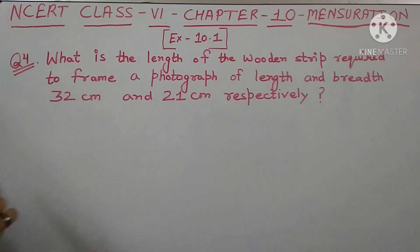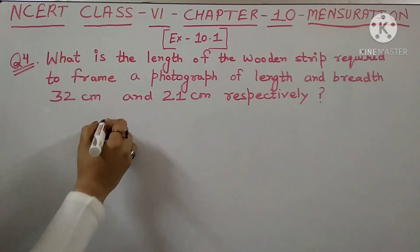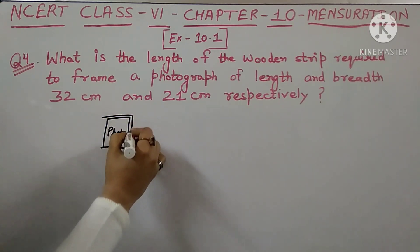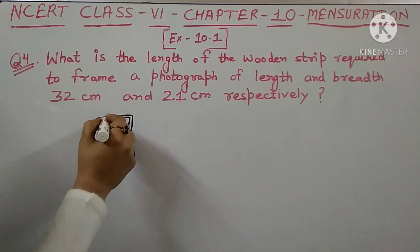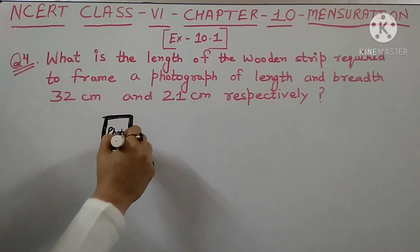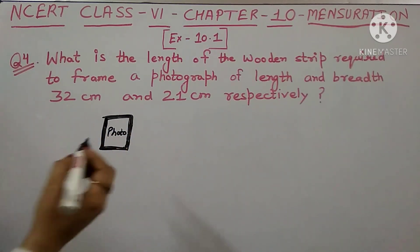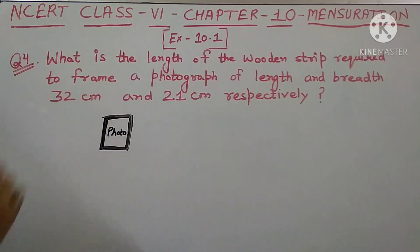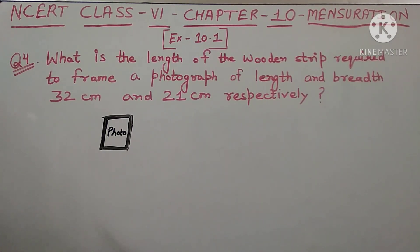To make a frame for the photograph, we need to find the boundary around it. The boundary of a shape is the perimeter. Since the photograph is rectangular, we need to find the perimeter of a rectangle.